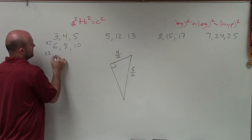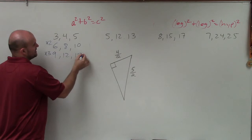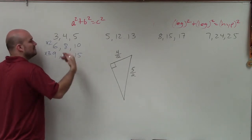If I multiply by 3, I would have 9, 12, 15. Guess what? That's another Pythagorean triple.